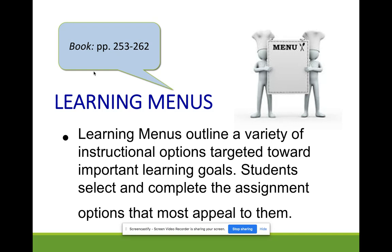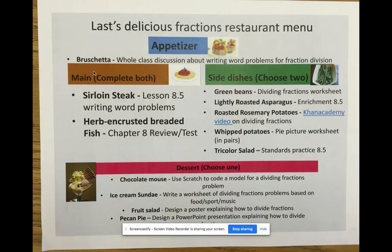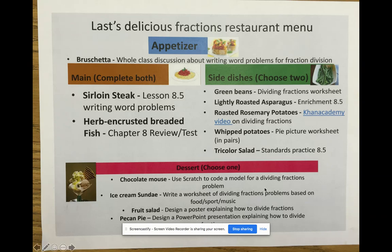Learning menus are like a package of activities with some choice involved in each section. A fifth-grade teacher used this example — he was from the UK so he described herb-encrusted breaded fish in a very appealing accent. Students had to do both main dish items, then choose two side dishes and one dessert. They got very excited about the menu because they got to pick. The dessert premise is that you're so excited about it that nobody has to tell you to eat it — you just want to.